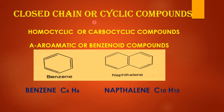The cycle or ring may be homocyclic, which means all the atoms in the ring are the same, or carbocyclic, which means all the atoms are carbon atoms. Homocyclic or carbocyclic compounds are further divided into two classes.